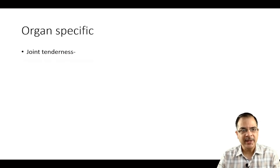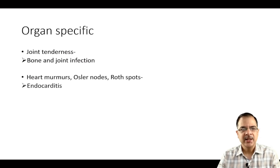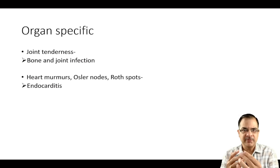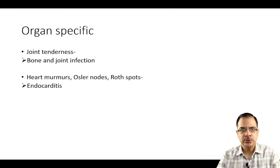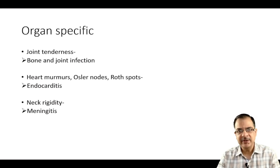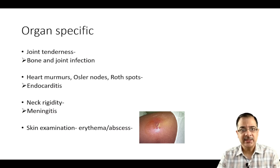Joint tenderness with swelling is seen in bone and joint infections like osteomyelitis. Heart murmurs, Osler nodes, and Roth spots are suggestive of endocarditis — always check the skin and fingertips for tenderness (Osler nodes), Janeway lesions (macular lesions on the palms), and in fundoscopy check for Roth spots. Neck rigidity with fever is suggestive of meningitis. Skin redness, erythema, or an abscess showing fluctuation indicates skin and soft tissue infection.